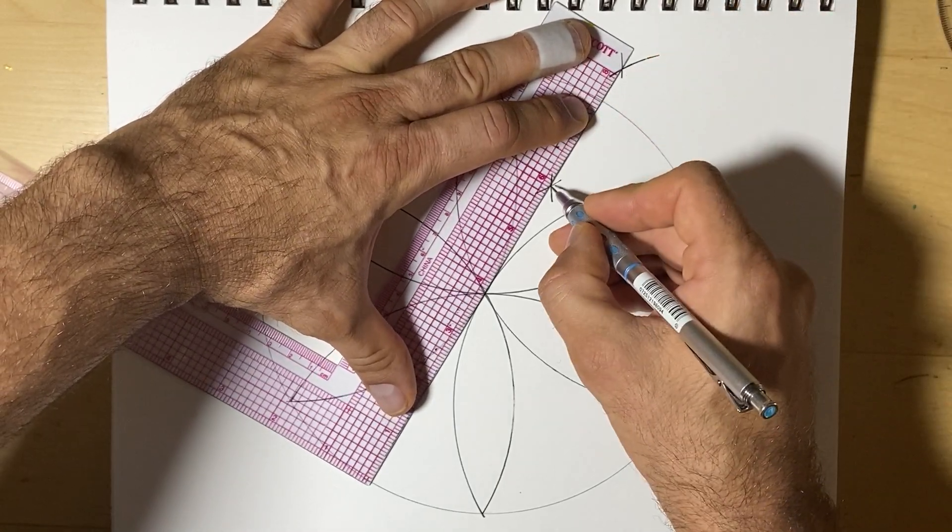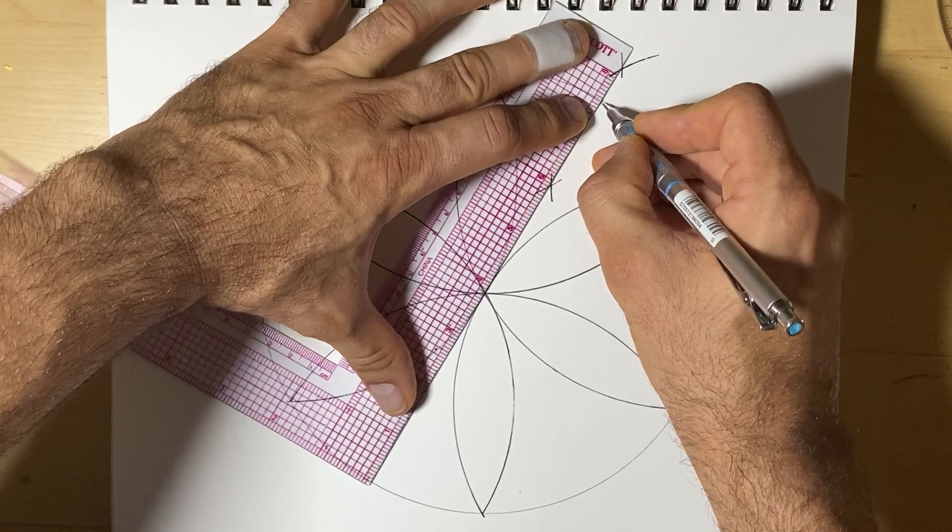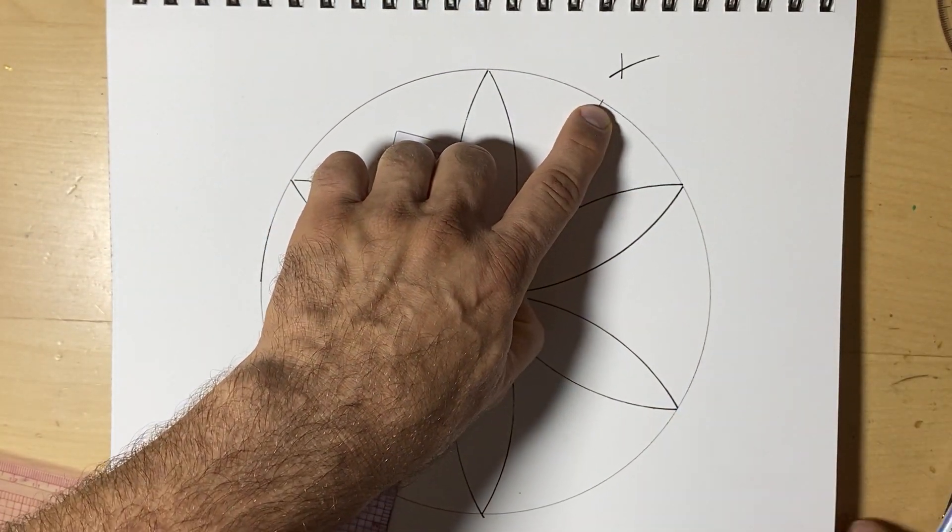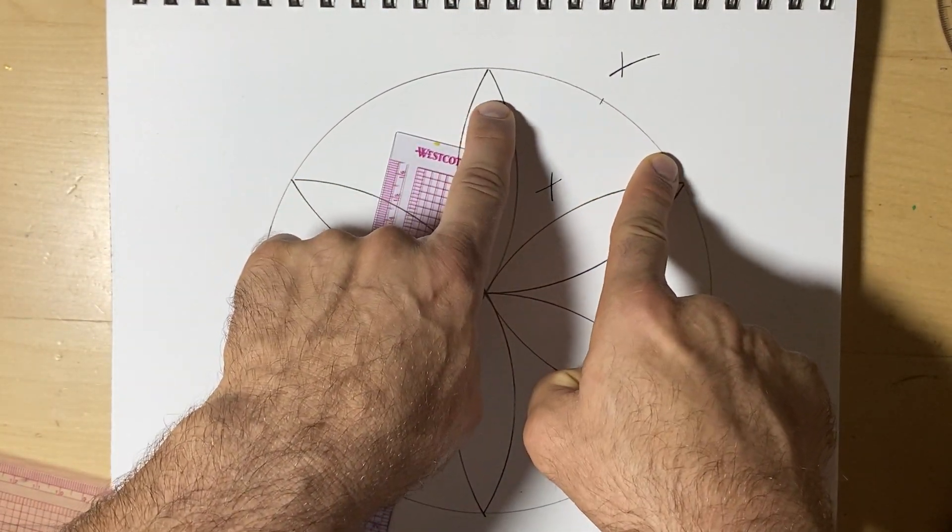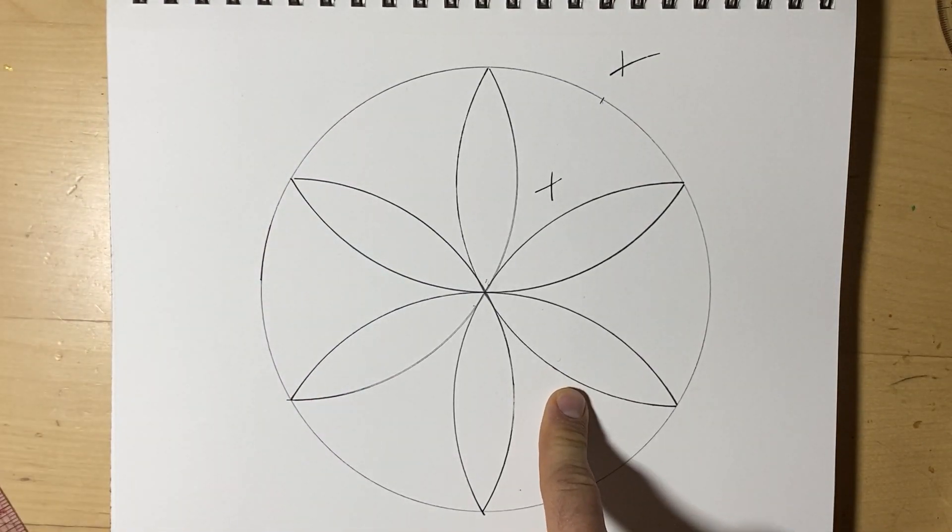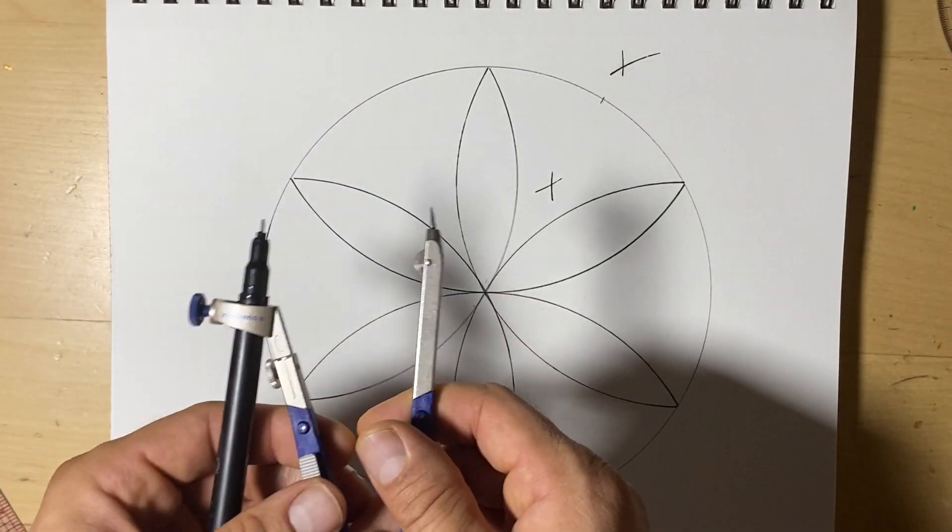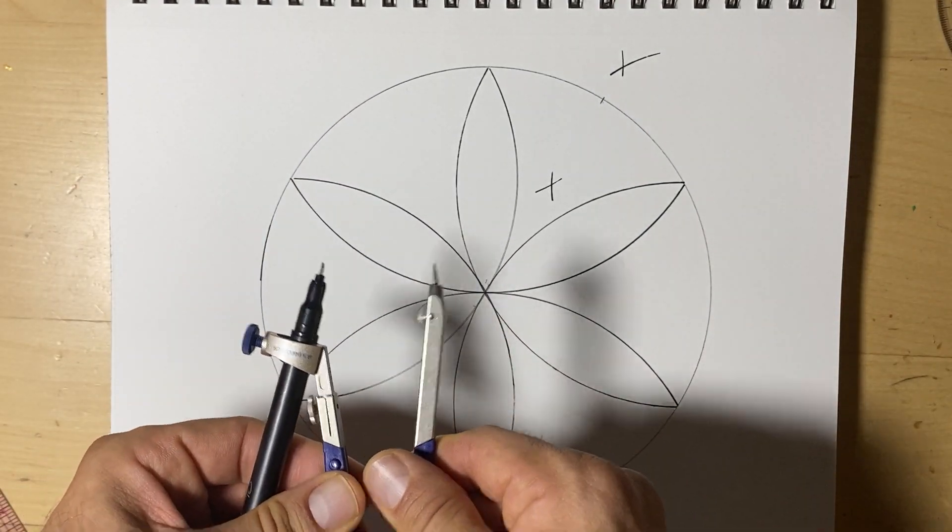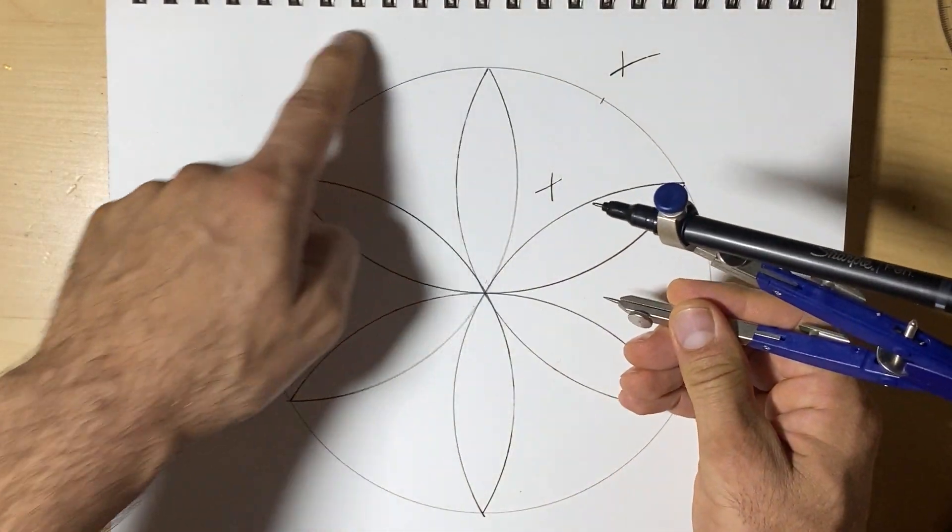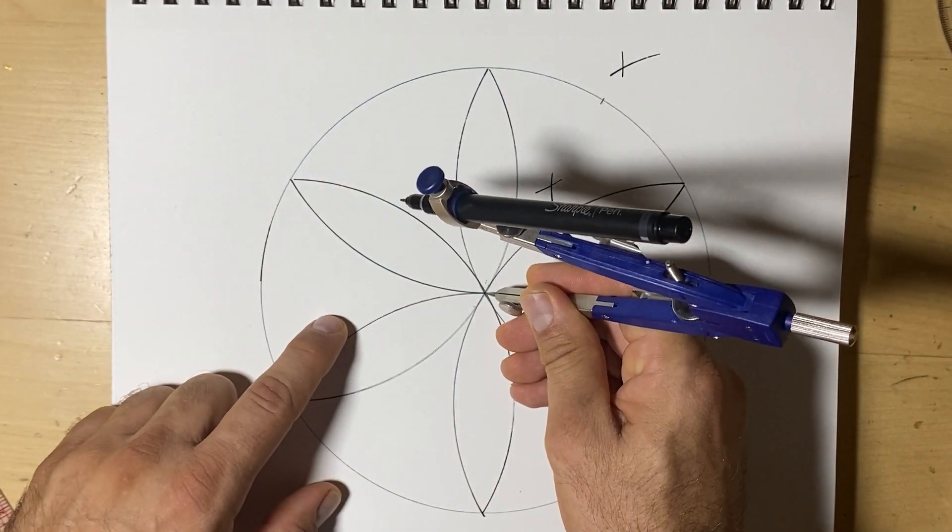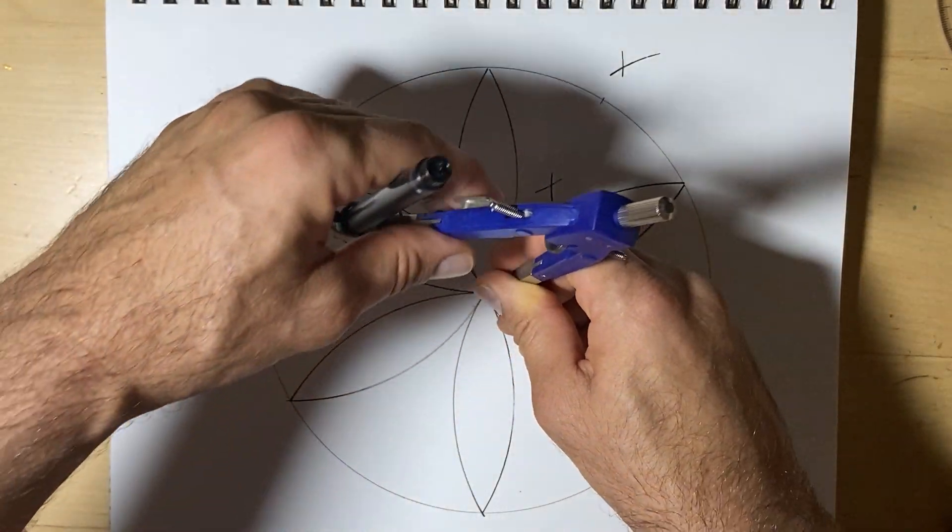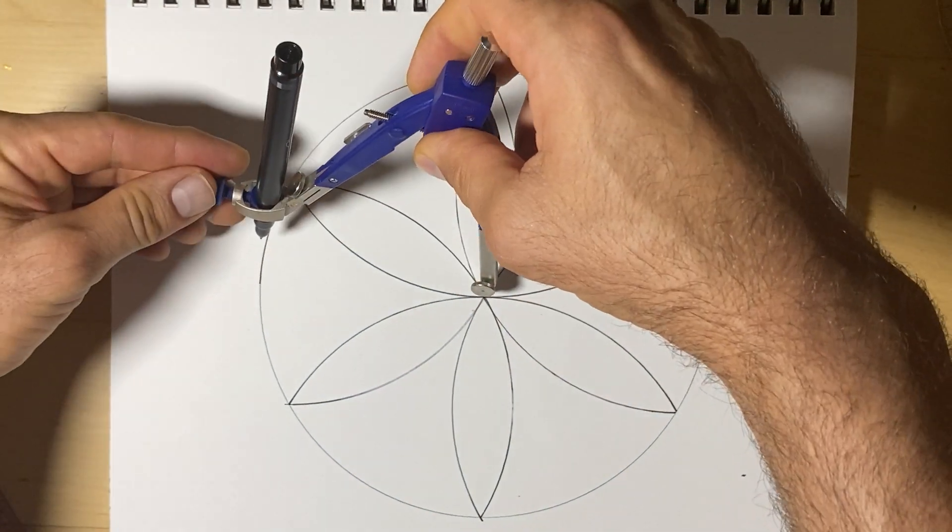And so our ruler is going to line up on those two spots. And we found the middle. So we found the middle in between these two. Now, since we adjusted our compass, we want to readjust it back to the original starting size. So I'll put the point in the center and I'll adjust it.